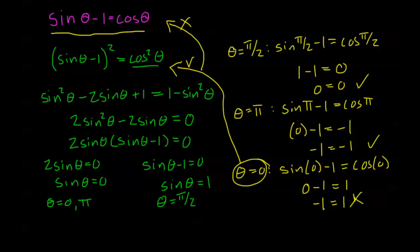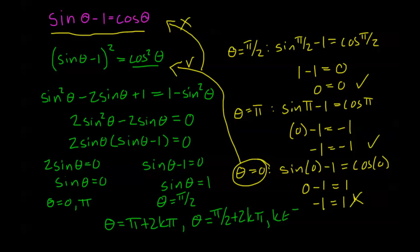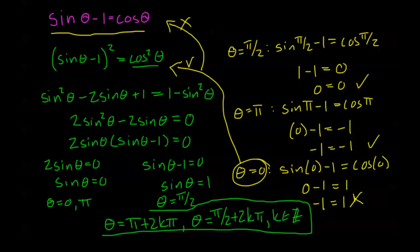So our final answer includes only the solutions that passed the check: theta equals π plus 2kπ, and theta equals π/2 plus 2kπ, where k is an arbitrary integer. We can square both sides when needed to apply our identities, but we must watch out for extraneous solutions — squaring can introduce one, two, or three extra solutions that don't satisfy the original equation.